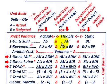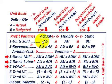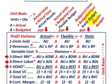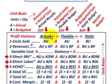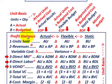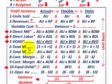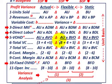Just to recap: actual results are done at end of period — actual units times actual costs. Your static budget is done at the beginning of the period — budgeted units times budgeted costs. Your flexible budget takes actual units times budgeted costs on a per unit basis. Looking at this in table form, you start with revenues and work all the way down to operating income, examining variances between actual, flexible, and static or master budget.